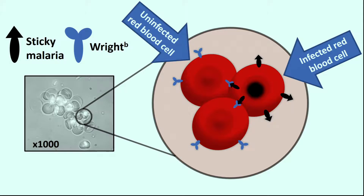And that's an example of what a rosette looks like under the microscope. These rosettes form much more commonly in the severe cases of malaria compared to the uncomplicated ones. We think they cause problems because they cause obstruction in the tiny blood vessels throughout your body, but particularly in the brain, where it can lead to seizures, coma and death.